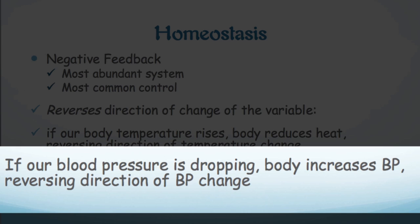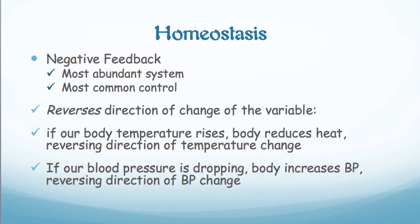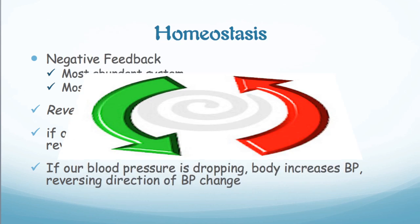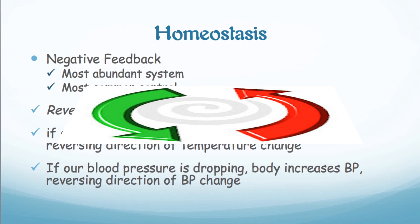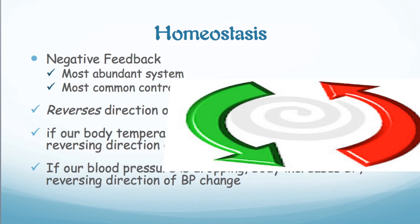If our blood pressure is dropping, the body will increase blood pressure, changing the direction and making it go in opposition. The feedback part loops back to the receptor, similar to what you may have seen with enzymes. It starts at the receptor with the stimulus, and when things start coming back into balance, the receptor notices that as well. What makes negative feedback 'negative' is that the variable is going away from balance and we turn it around to come back to balance, no matter which direction it's going.